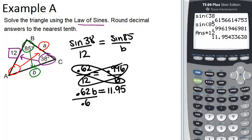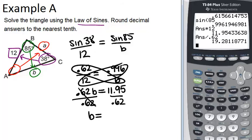So divide both sides by 0.62, and we get B equals our 11.95, which is in our calculator, divided by 0.62. So we get approximately 19.3.